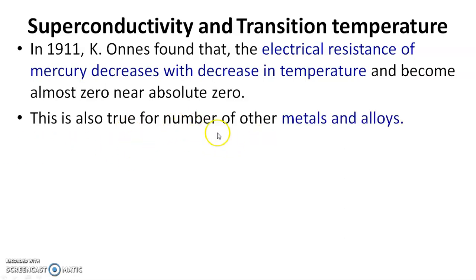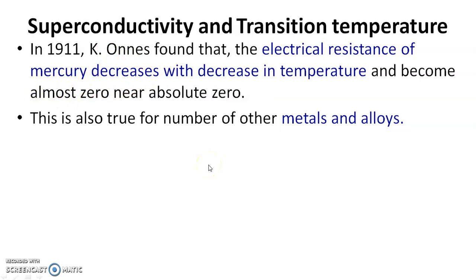This is also true for a number of other metals and alloys. He selected mercury for his experiment because mercury can be purified by distillation. It is very easy to purify mercury by distillation, and therefore Kamerlingh Onnes selected mercury to check the effect of temperature on electrical resistivity or conductivity.